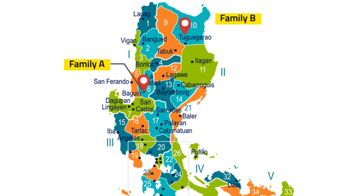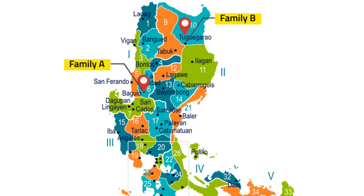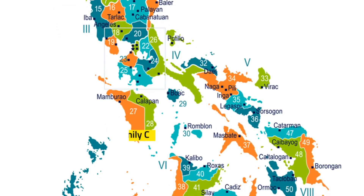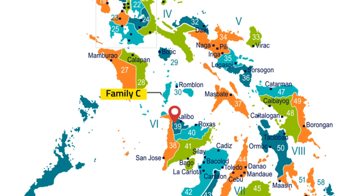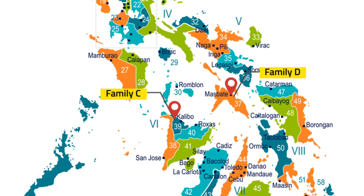Family B in Tuguegarao City will travel 320 miles in 8 hours. Family C in Kalibo, Aklan will travel 400 miles in 10 hours. Lastly, Family D from Masbate City will travel 560 miles in 14 hours.